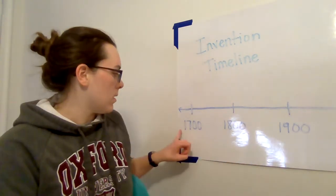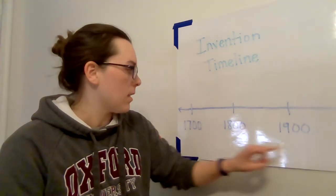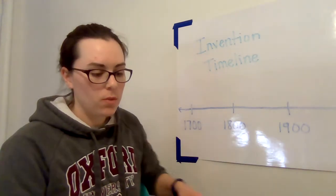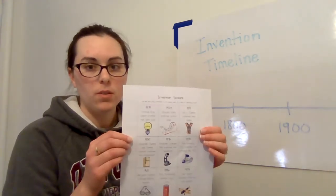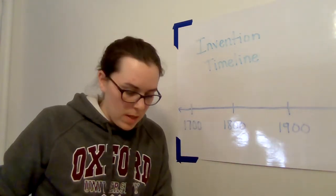And then look at the third and fourth digit. So look at the last two digits to figure out what order to put them in. For example, let's look at the light bulb which was invented in 1879.